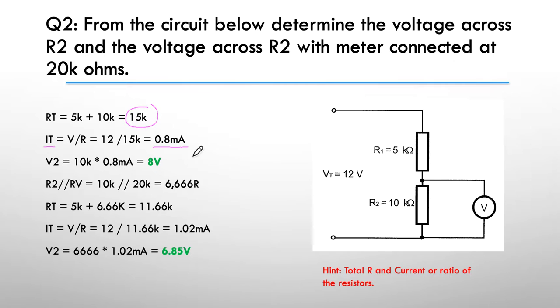Pretty easy then to work out the voltage across the 10k resistor without the multimeter. So V2 is simply 10k times 8 milliamps—that's the current multiplied by the resistance—giving me 8 volts. So without the meter I've got 8 volts across R2.